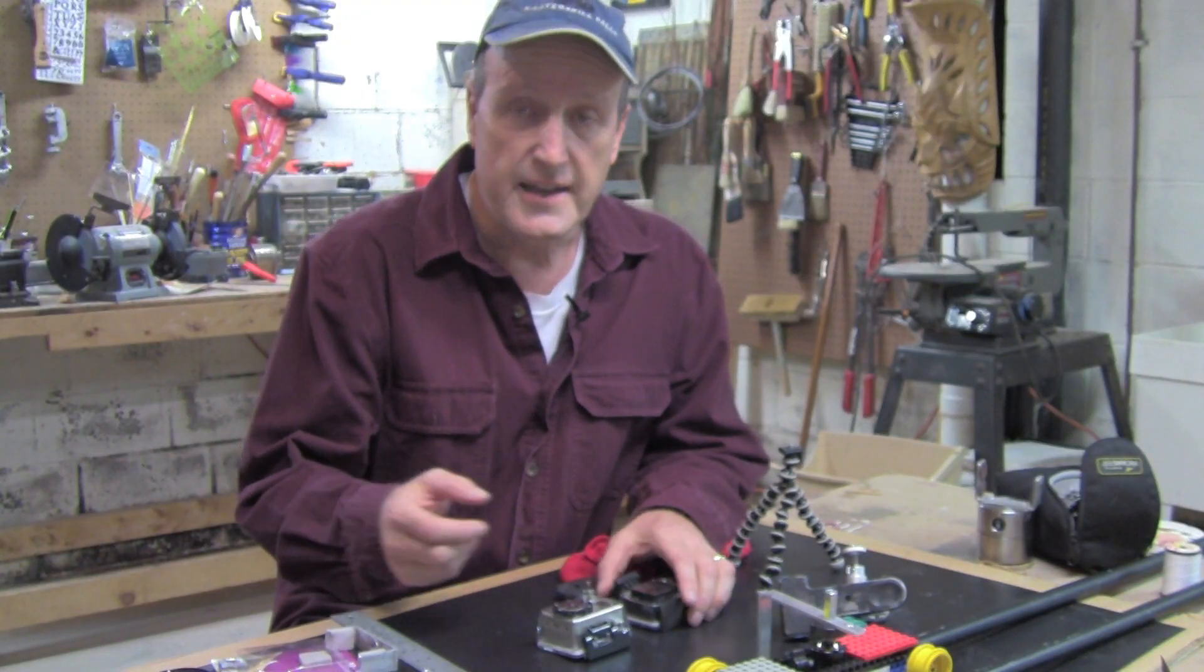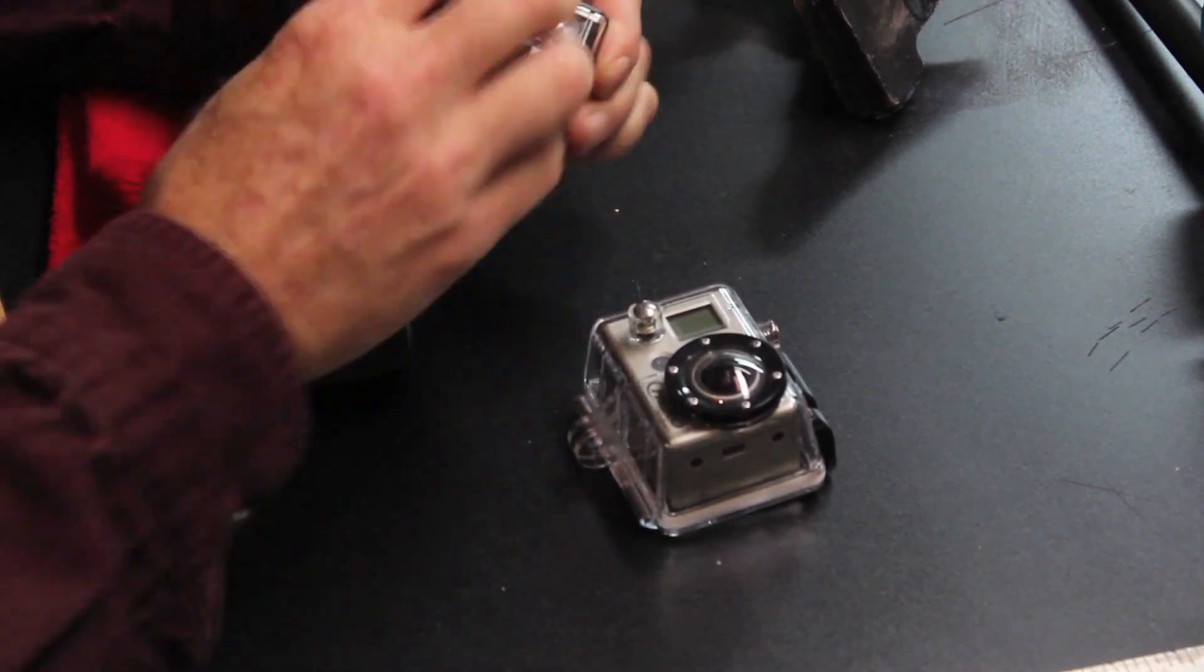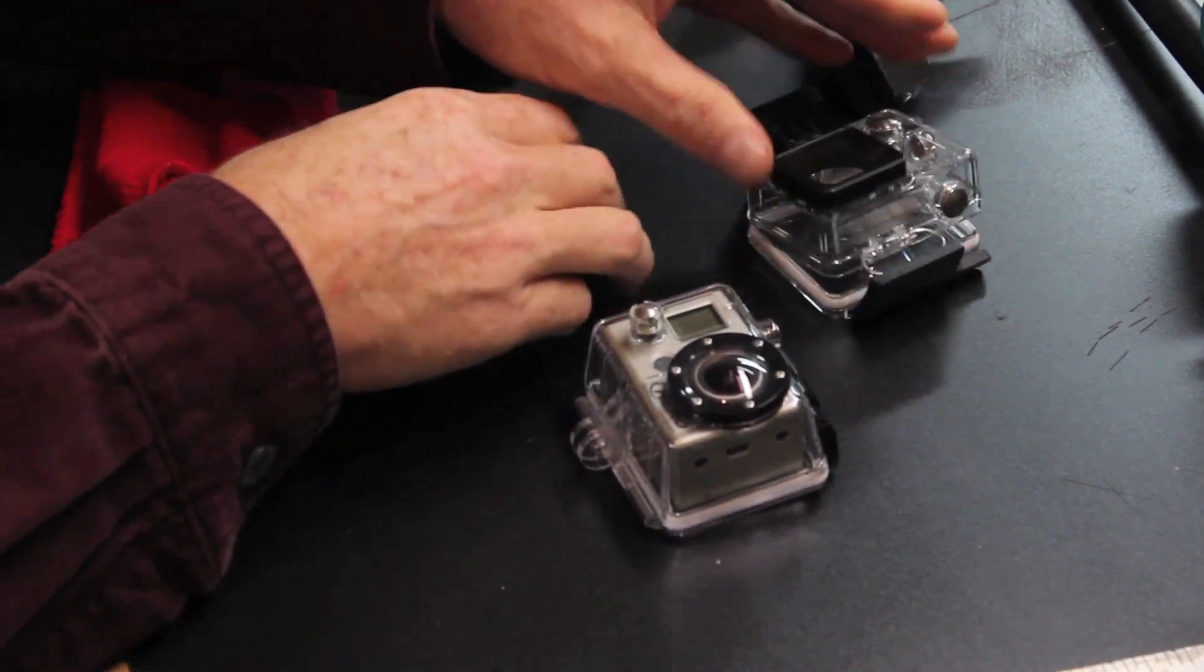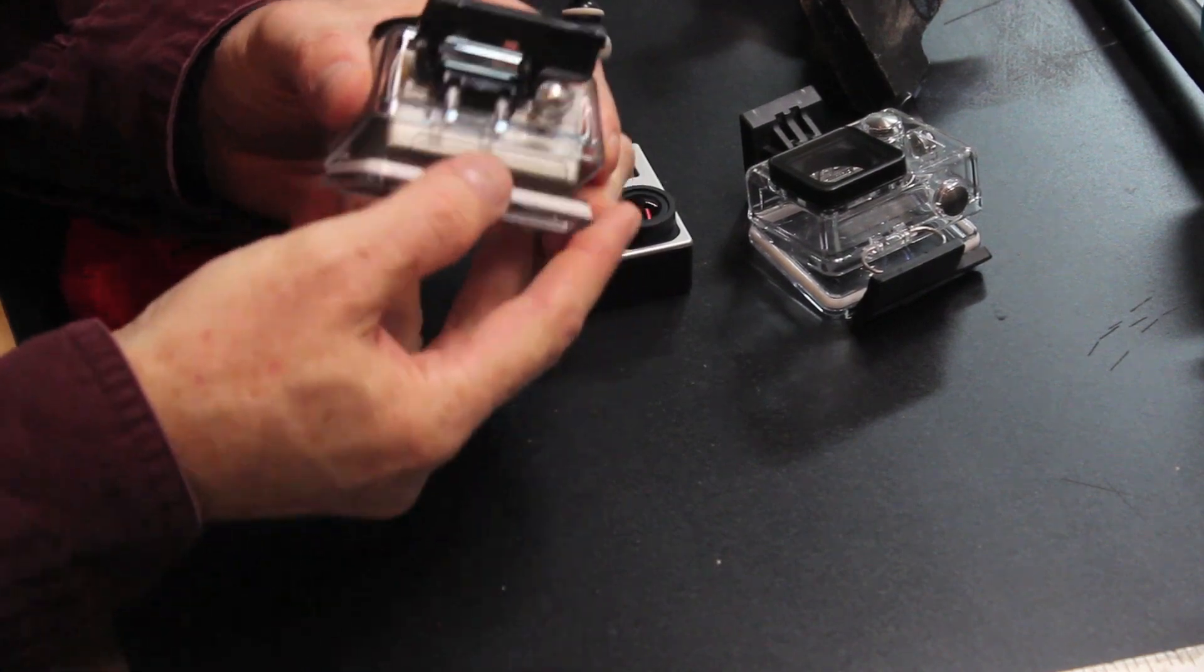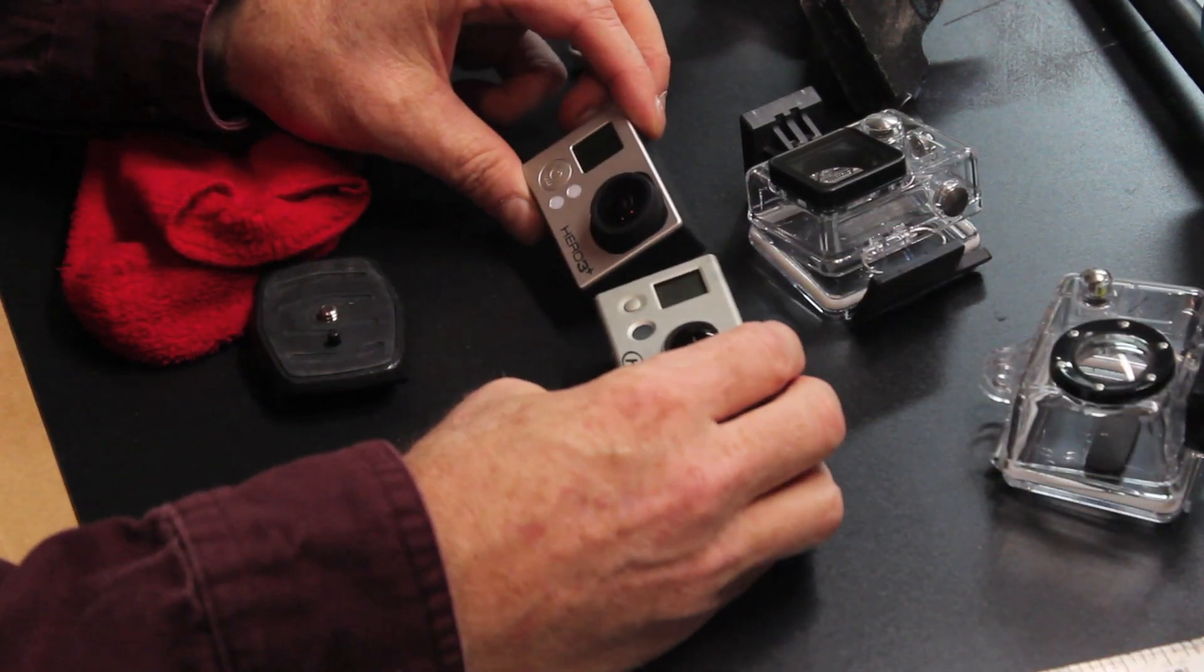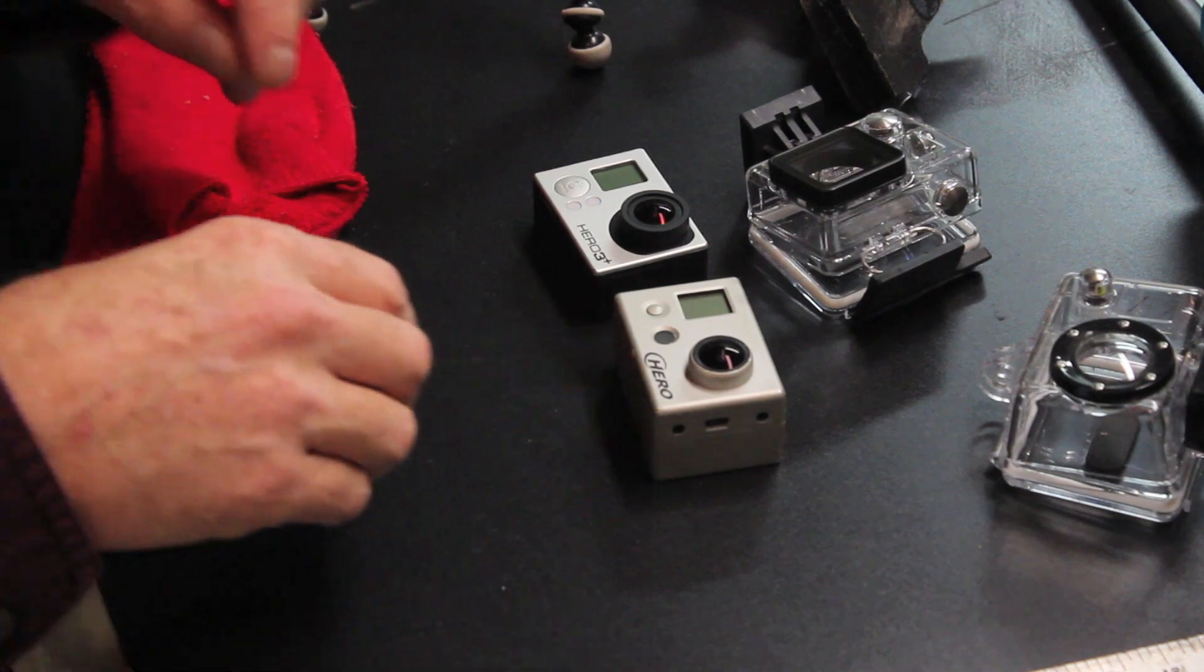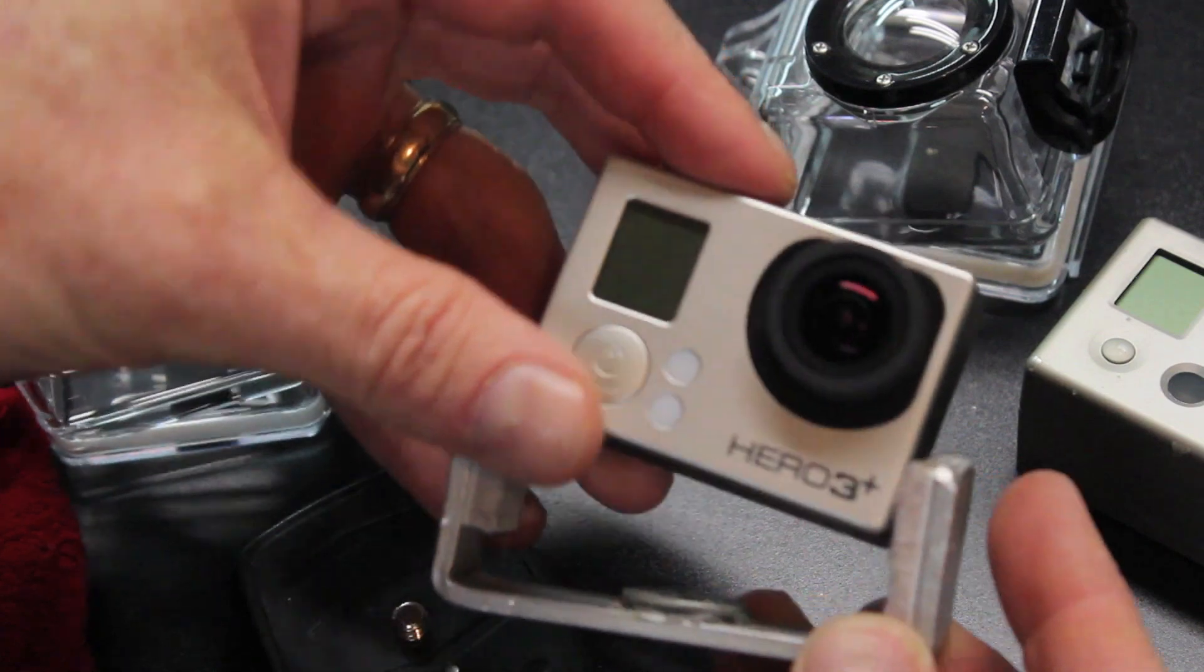Now the first thing I did was to take the GoPros out of their outer case. And since I'm not doing extreme sports videography, I don't really need that waterproof case. I know this exposes it to a little more risk, but as long as you're careful with it and watch the lens it's okay. But what this does is it allows me to use a custom mount that I made which will fit onto any standard tripod.